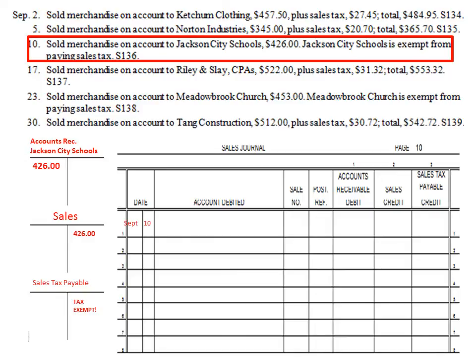In the Sales Journal, this entry is dated September 10. We write just 'Jackson City Schools' in the account column, Sales Invoice S136, Accounts Receivable Debit $4.26, and Sales Credit $4.26. The Sales Tax Payable column is left blank because they are tax exempt — we do not owe taxes to the government on merchandise sold to tax-exempt customers.